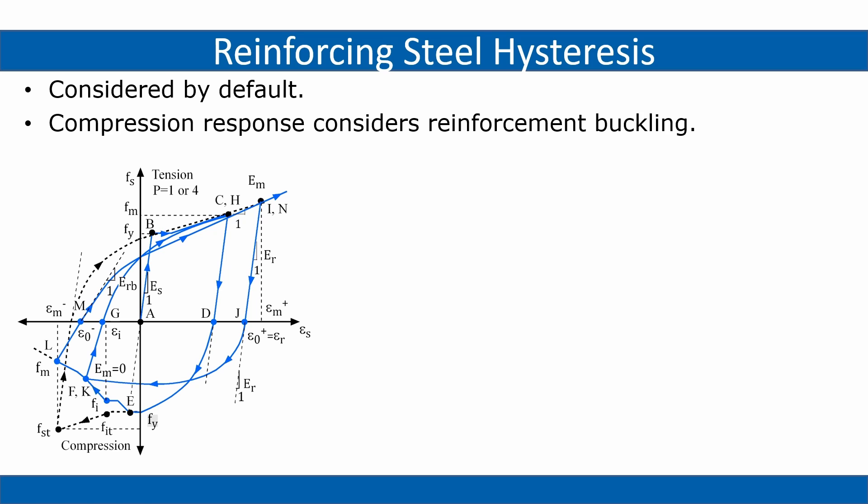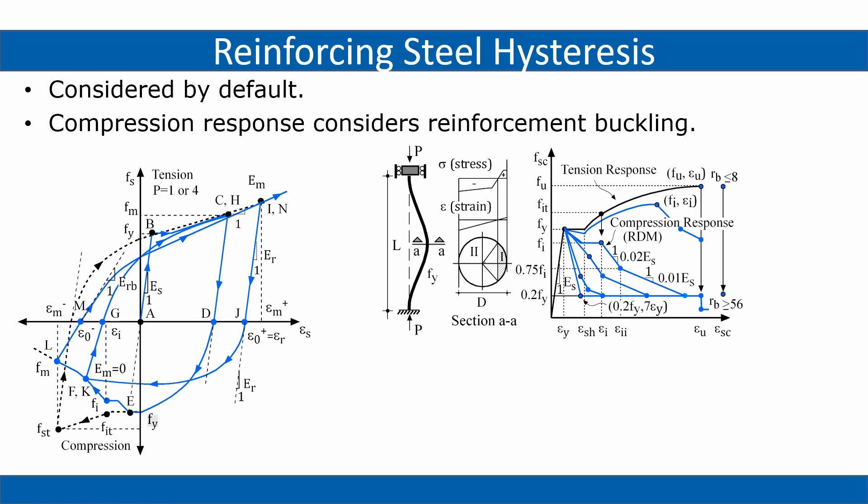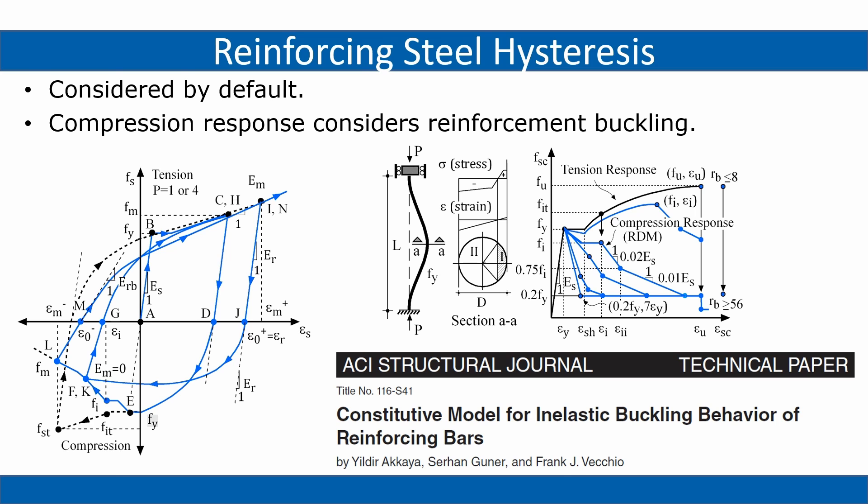Reinforcing steel hysteresis model includes yielding, strain hardening, and Bauschinger effects. Compression side of the response accounts for reinforcing buckling and associated strength loss.